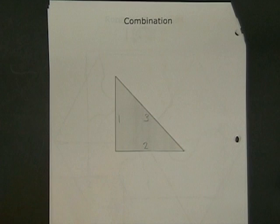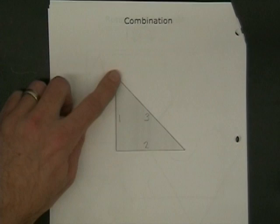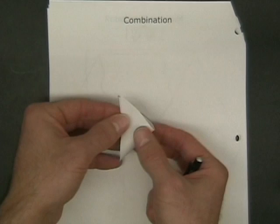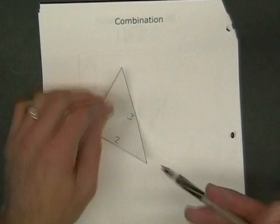Find the midpoint of side three by folding this vertex to this vertex. That crease will be the midpoint of side three.